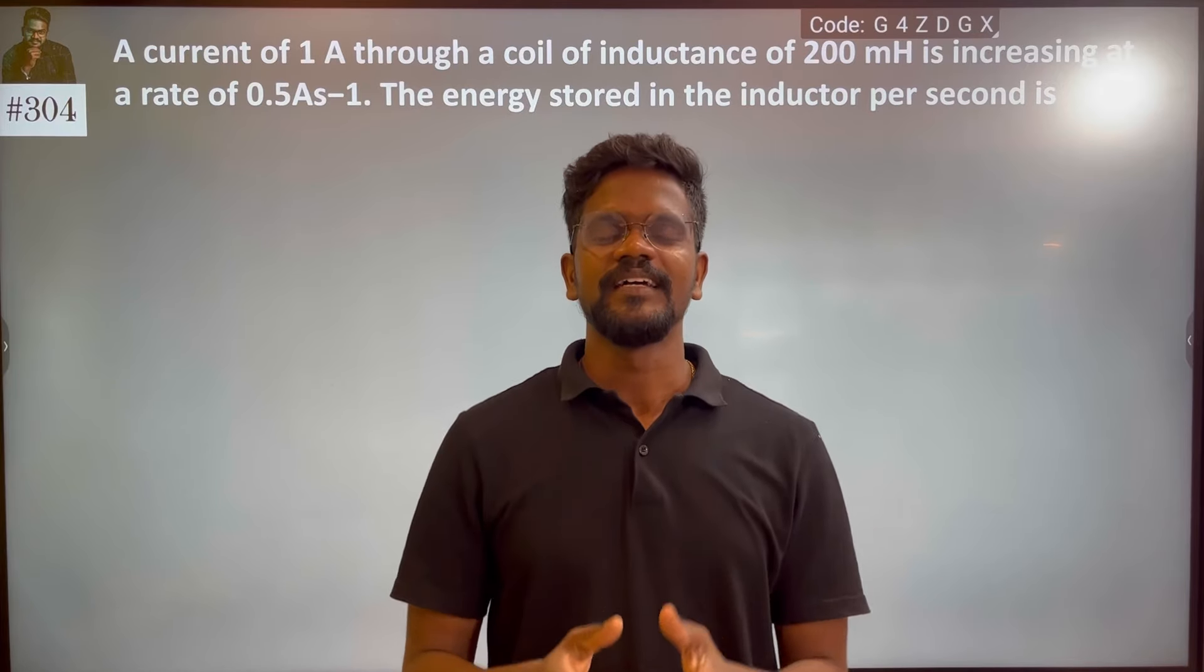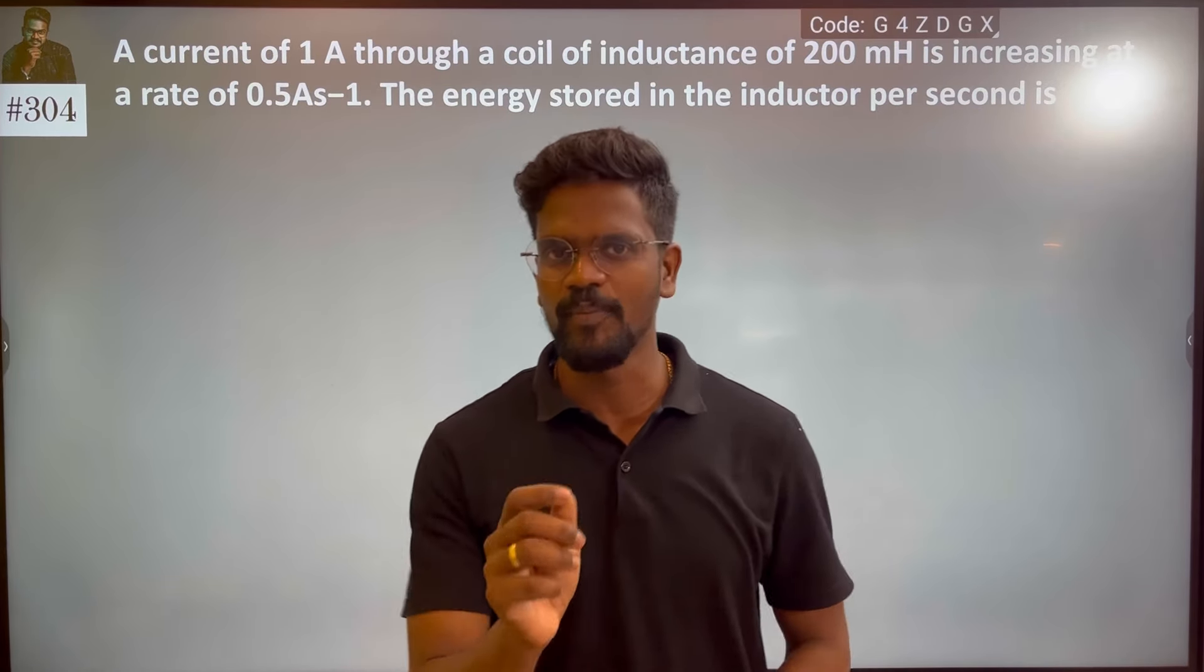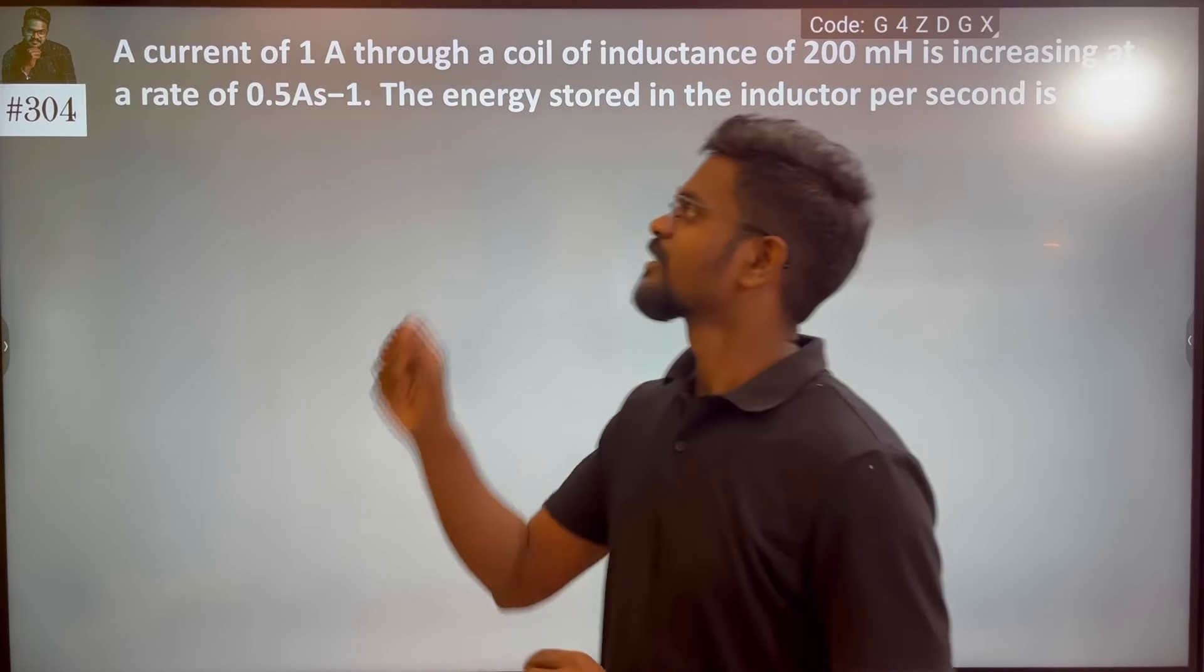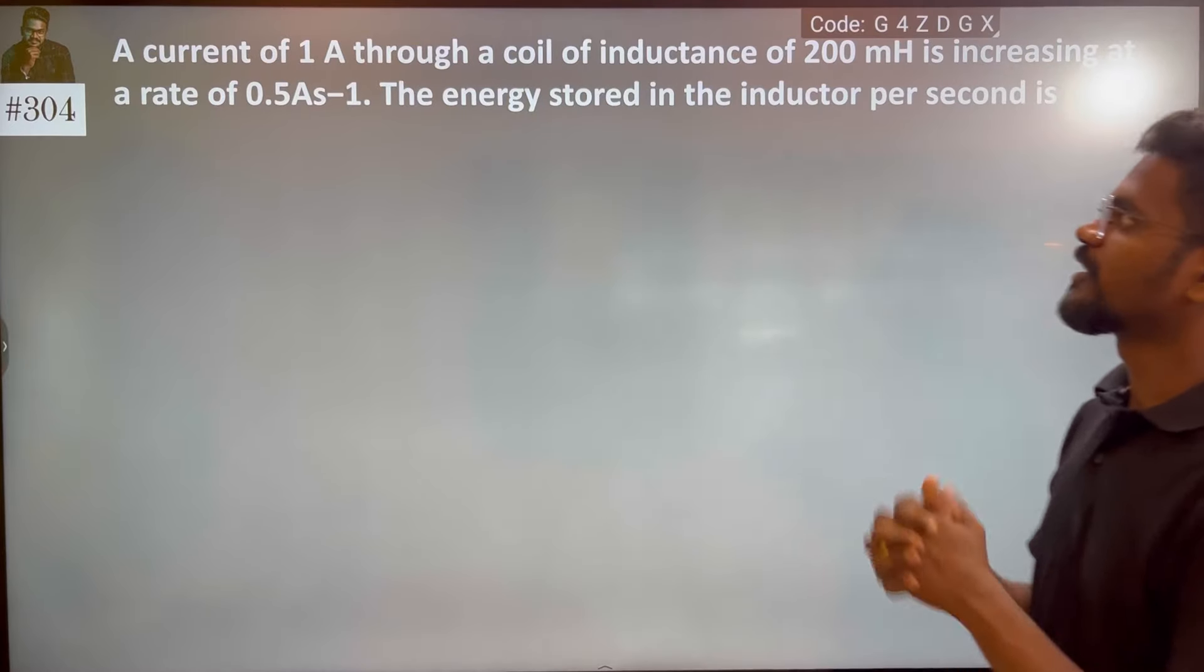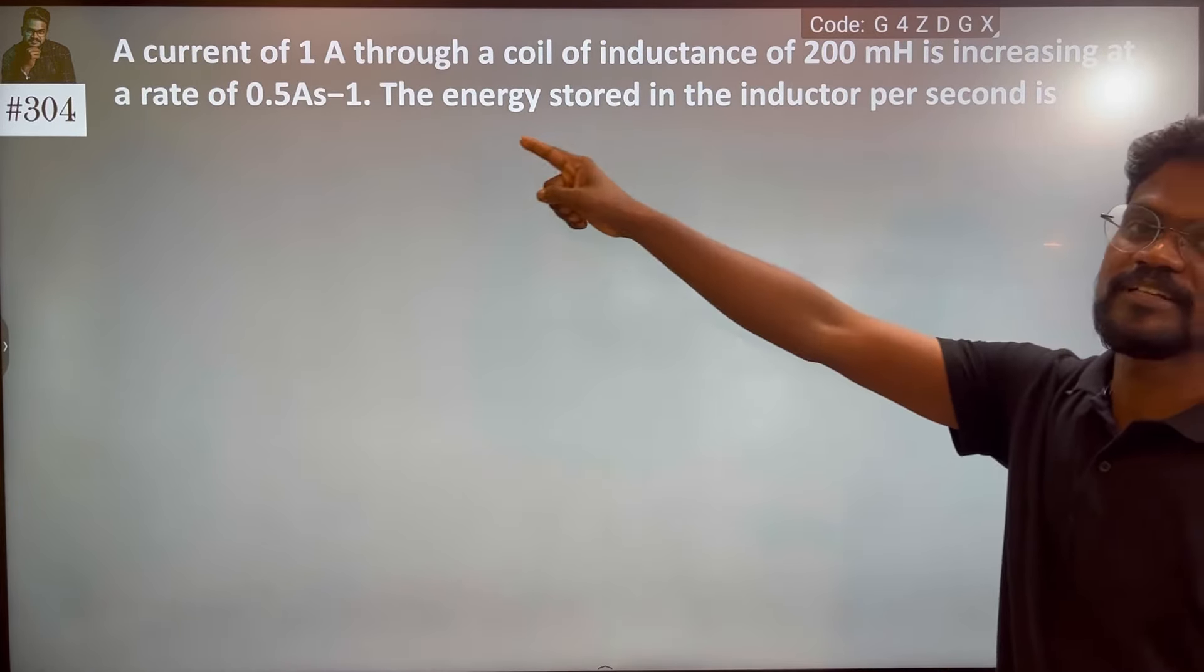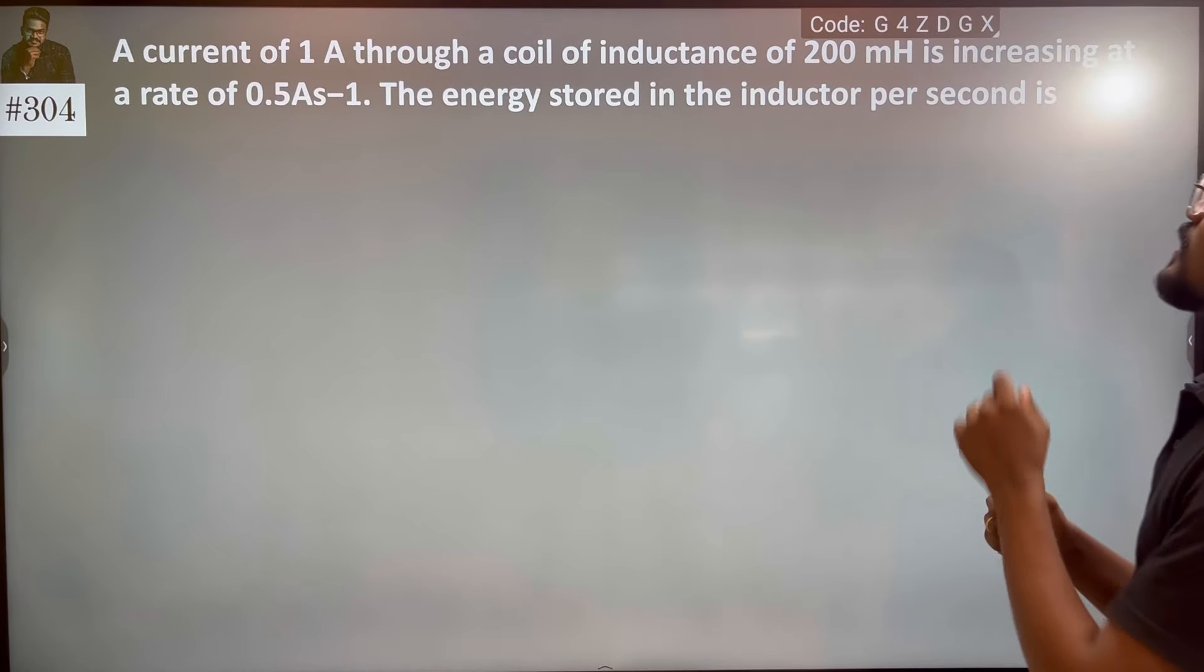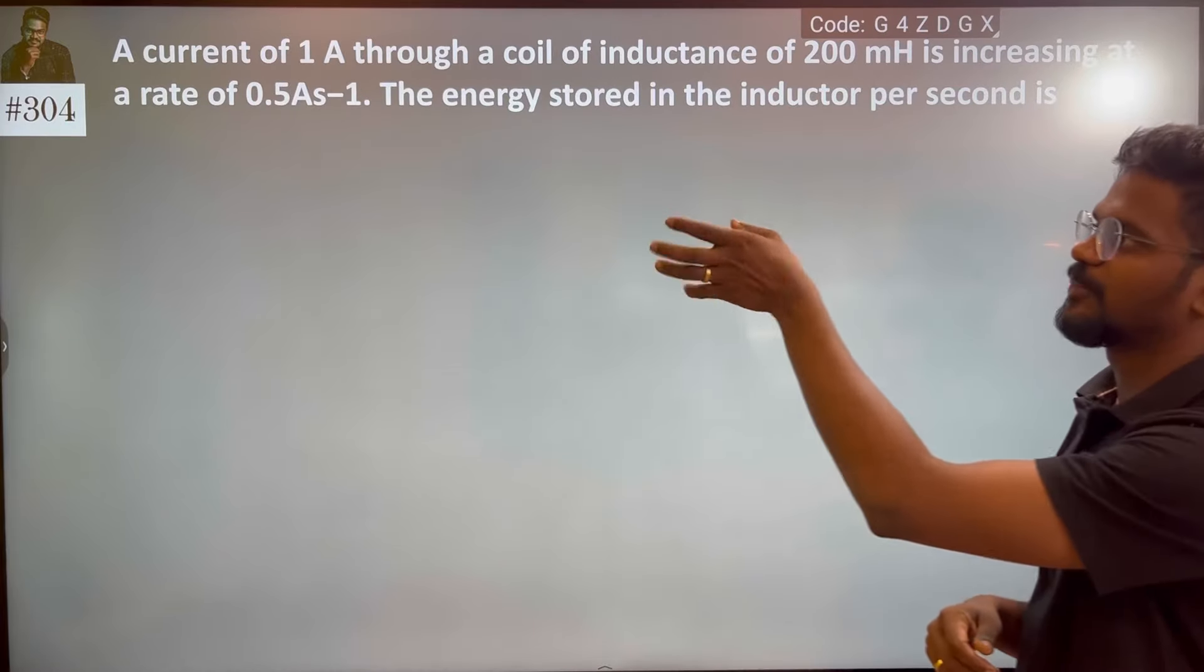Hi everyone, I have a problem with my mind. What is the problem with my mind? A current of 1A through a coil of inductance. So, the inductor is 1A current of 200 mH is increasing at a rate of 0.5 Ampere per second.